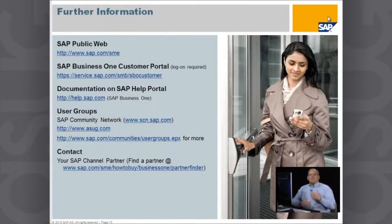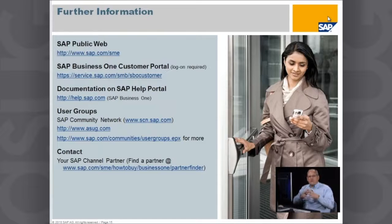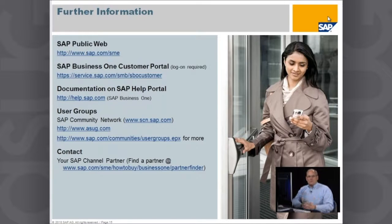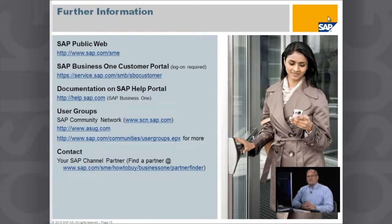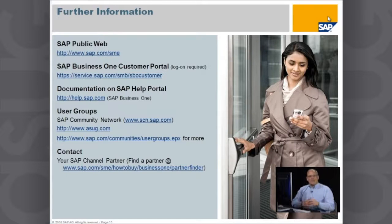There's lots of other functionality in SAP Business One around sales, purchasing, banking, and inventory, and I'd invite you to look at the more detailed demonstrations available on this site. To wrap up this brief presentation: we've talked about the business challenges SAP Business One addresses, the design concept that drove its development, and you've heard from Dave's Gourmet. You may be thinking — what do I do next? You've got two choices: view more detailed product demonstrations on this site, or click the 'Ask a Question' button.